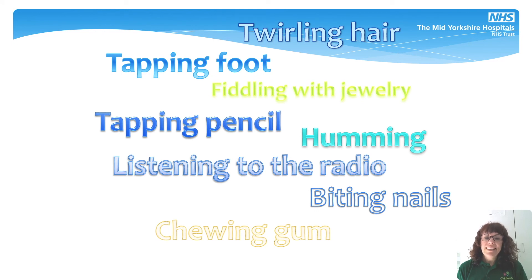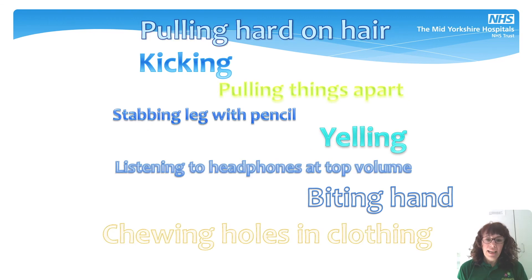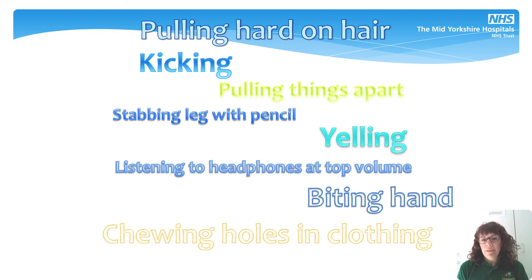It's very common for people to sensory seek in subtle ways, and it's not something we need to worry about. For example, these are the sorts of things that most people do to get a little bit more sensation: twirling their hair, tapping a foot, playing with jewellery, tapping a pencil, humming, chewing gum, or biting their nails. This isn't something we'd worry about at all because it's not causing any problems. However, if someone were starting to pull hair so hard it was coming out, breaking things, kicking people, yelling, or biting, these are the sorts of behaviours we would start to worry about because they are causing a real problem in everyday life.